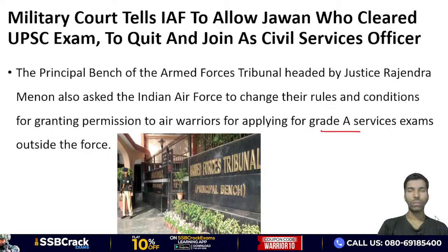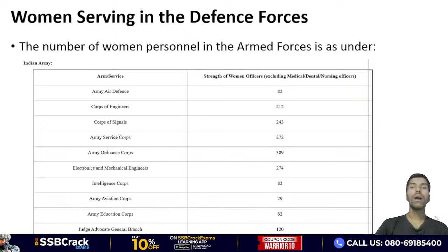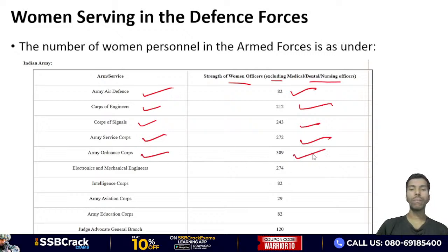Raksha Rajmantri ne desh ke saamne armed forces mein women ki participation ka data pesh kiya — Army, Navy, Air Force, Medical College aur MNS sabhi mein. Indian Army mein (excluding Medical, Dental, Nursing): Army Air Defense 82, Corps of Engineers 212, Corps of Signals 243, Army Service Corps 272, Army Ordnance Corps (AOC) 309 (sabse zyada), Electronics and Mechanical Engineers 274. Intelligence Corps 82, Army Aviation Corps 29, Army Education Corps 82, Judge Advocate General (JAG) Branch 120.